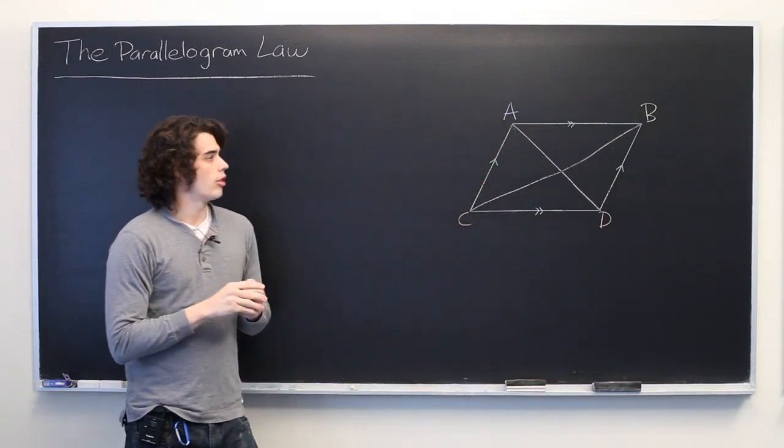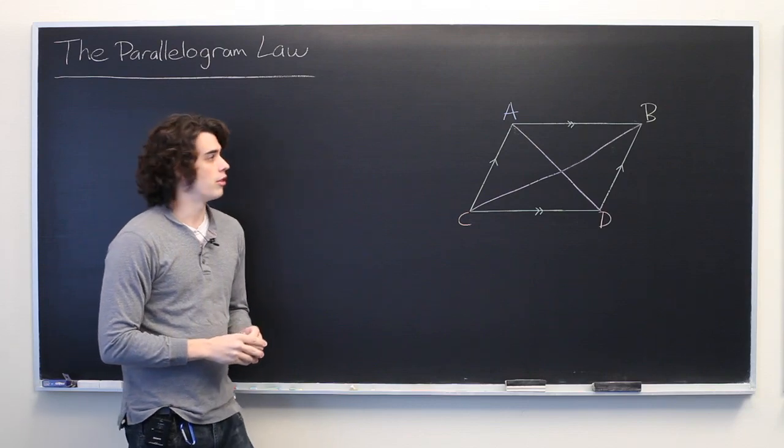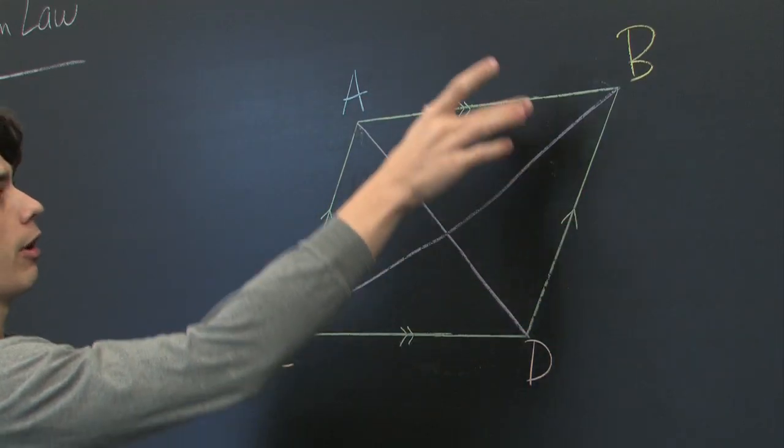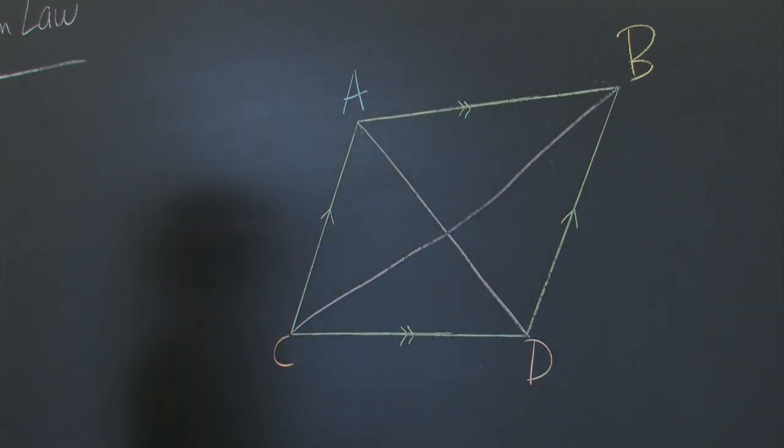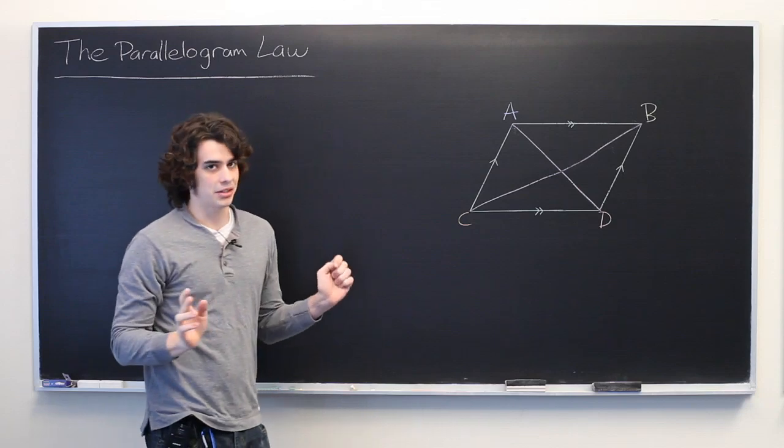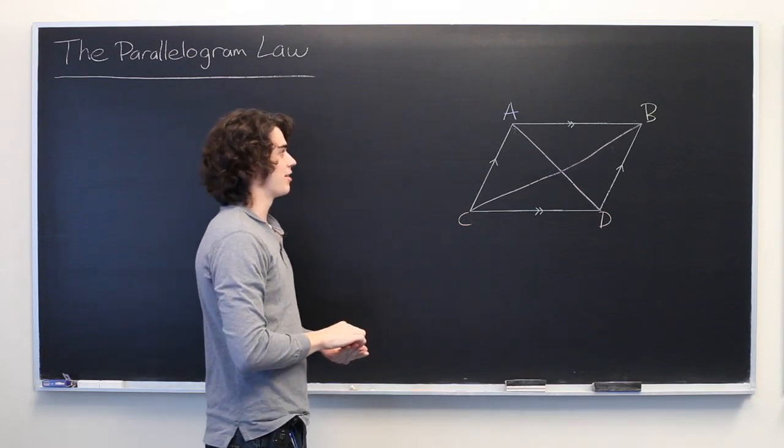Okay, so the parallelogram law states that the sum of the squares of the four sides of the parallelogram must equal the sum of the squares of the lengths of the diagonals. That's a lot to take in at once, so let's break it down slowly.